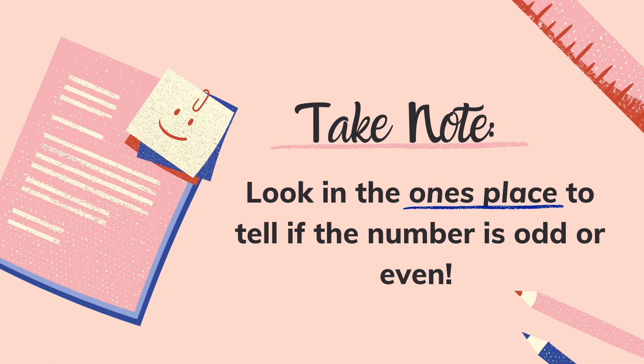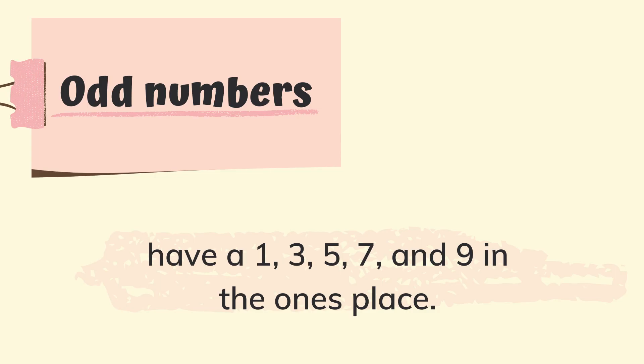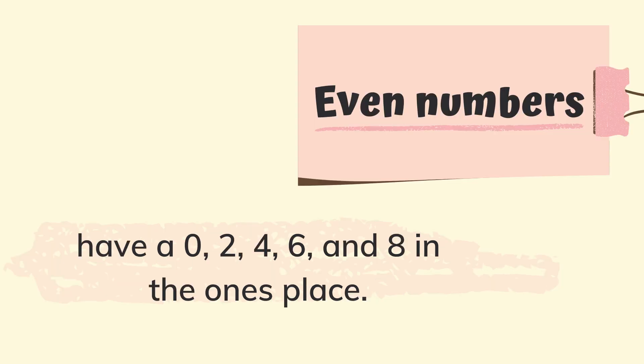Take note! Look at the ones place to tell if the number is odd or even. Odd numbers have one, three, five, seven, and nine in the ones place, while even numbers have zero, two, four, six, and eight in the ones place.